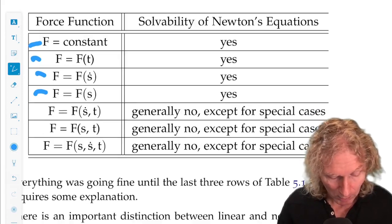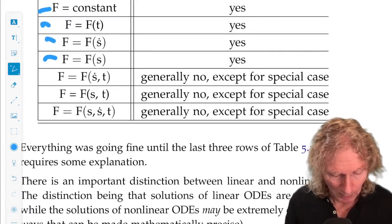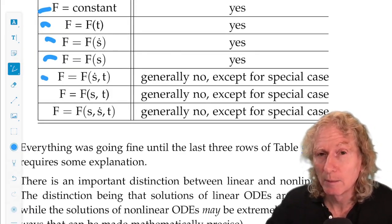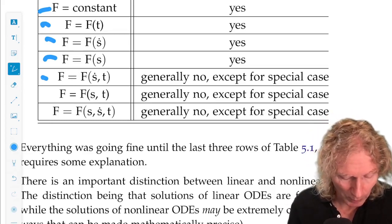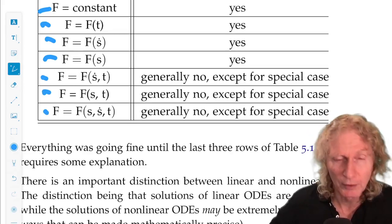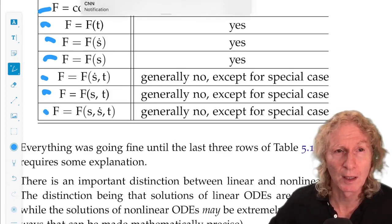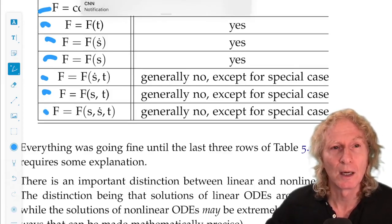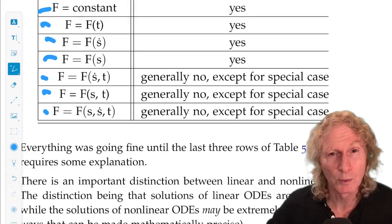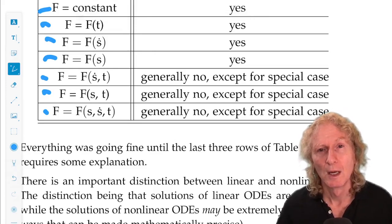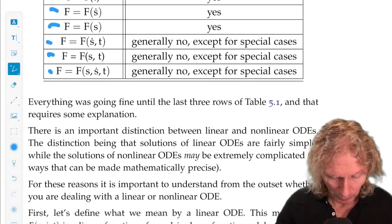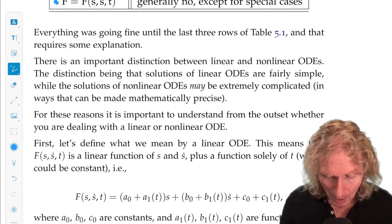But now we can have more complicated solutions. A force depending on time and s dot, a force depending upon position and s dot, and a force depending on position, s dot, or velocity, and time. Generally, for these last three, we cannot solve Newton's equations. But there are special cases. What are the nature of the special cases for which we can solve them?